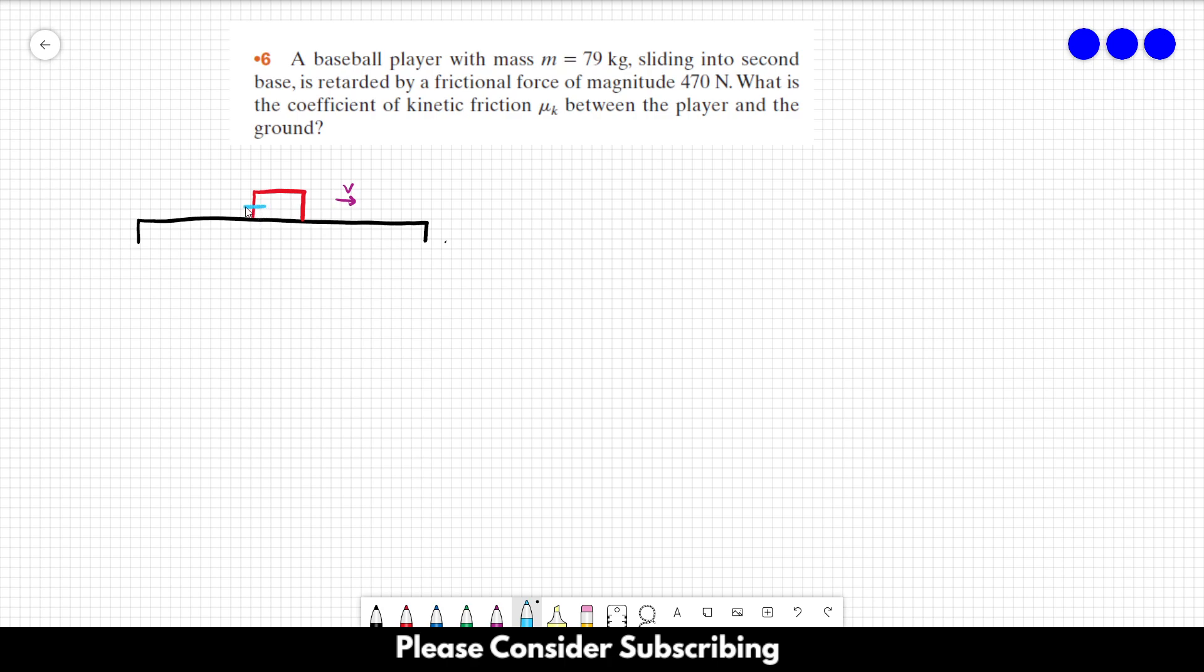So let's draw the forces that are acting on the player. So we have a frictional force to the left, we have the gravitational force pointing downwards, and the normal force pointing upwards.